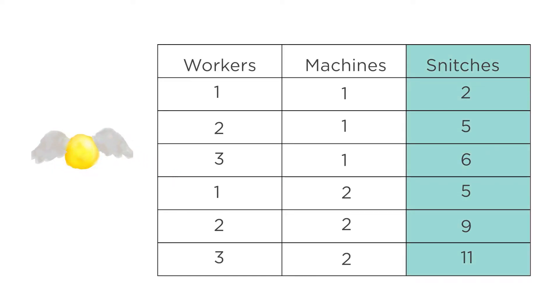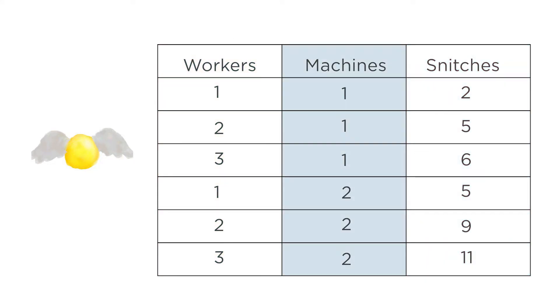At their core, production functions capture what is technologically feasible for firms to produce with a given level of inputs. Let's take a look at an example of a made-up production function for the fictitious golden snitch from the world of Harry Potter. This table shows the number of snitches that can be produced with a given amount of labor, or number of workers, and capital, or number of snitch-making machines.